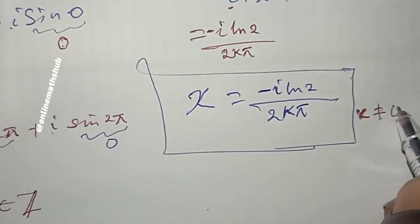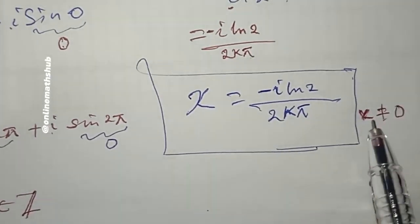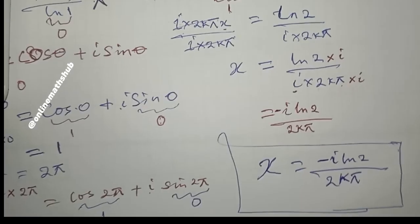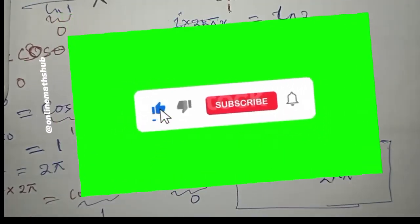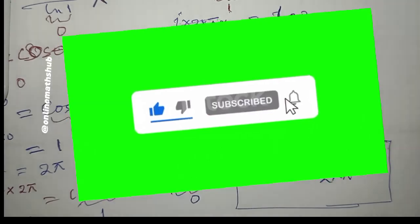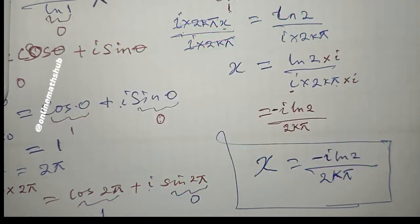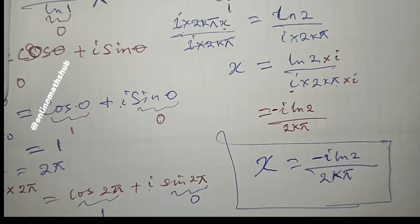This is the final answer that satisfies the equation we were solving. Note that k cannot equal zero, since that would cause division by zero. Thank you so much — subscribe for more videos, make sure to like, and drop any questions in the comments. See you in the next video, bye!